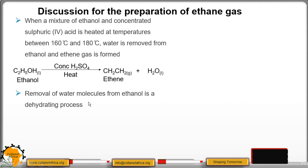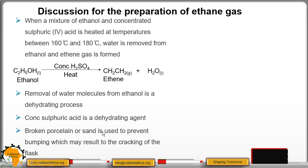Removal of water molecule from ethanol is a dehydrating process. Concentrated sulfuric acid is a dehydrating agent. And broken porcelain or sand is used to prevent bumping which may result in the cracking of the round bottom flask.